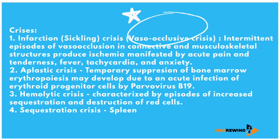The most common and important crisis is infarction or sickling crisis, also known as vaso-occlusive crisis. Not only RBCs but also granulocytes, platelets, mononuclear inflammatory cells, and other inflammatory mediators contribute to this vaso-occlusion. There are intermittent episodes of vaso-occlusion in connective tissue and musculoskeletal structures, producing ischemia manifested by acute pain, tenderness, fever, tachycardia, and anxiety.